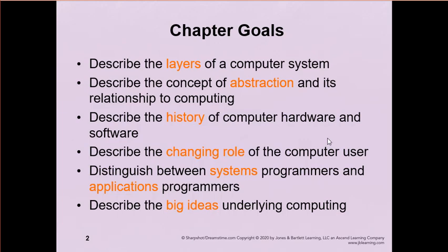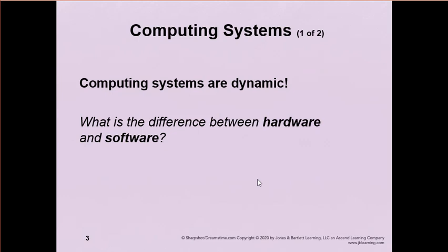Abstraction is one of the most important concepts and theories behind computer science. And then the history of hardware and software and how the role of the user has changed over time, and the difference between systems and applications programmers, and big ideas, which we'll probably hold off on until later.